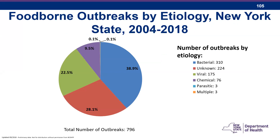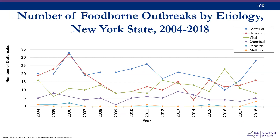Looking at foodborne disease outbreaks by etiology for the same time period, a majority of the outbreaks were bacterial, followed by unknown. Viral was the third most common category. Our bacterial outbreaks tend to be increasing, and a lot of this could be due to better technology — with the use of whole genome sequencing and pulsed-field gel electrophoresis, we're identifying more outbreaks that are occurring.